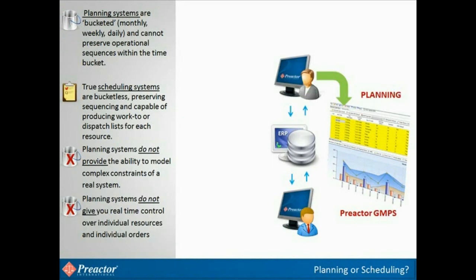Planning systems typically work in certain silos, periods, or buckets of time. They will load operations into each bucket, which could be a day, a week, or a month at its extreme, but take no account of the sequence of operations within each bucket. True scheduling systems are not limited in this way. It is bucketless. It will produce the exact time when each batch is due to start on each resource, and when it should end, taking into account the attributes of the previous batch, setup time, and run rates. So planning systems, with no access to what should be happening at any time during the schedule horizon, cannot give you a true model that can predict what will happen at some point in the future. They cannot give real-time control of resources or individual orders.